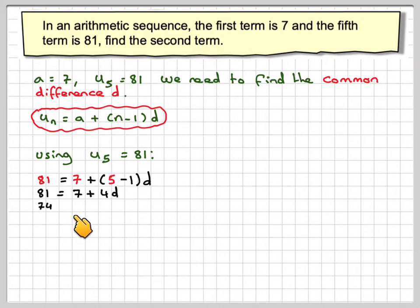74, if we take 7 from both sides, is going to be equal to 4d, and therefore d will be equal to 18.5.